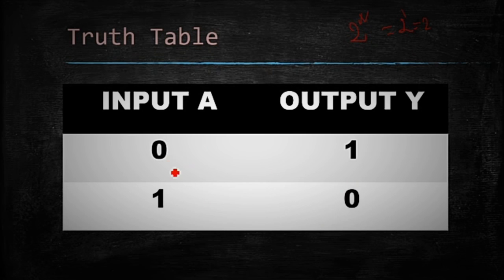That is why 0, 1 and 1, 0. When input is 0, then output is 1. Because it is A bar, conjugate or complement of A. 1 then 0.